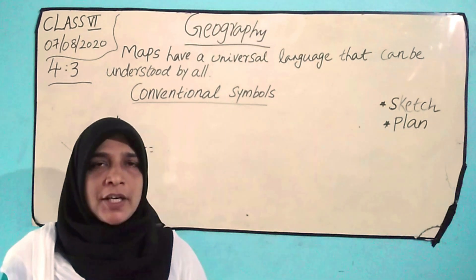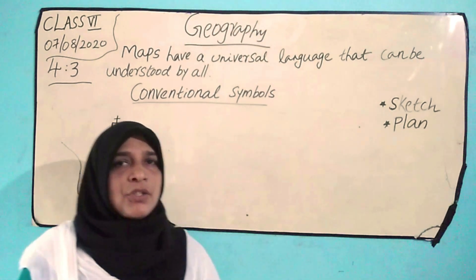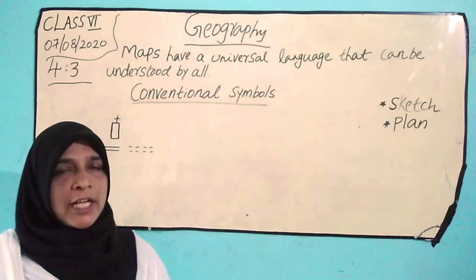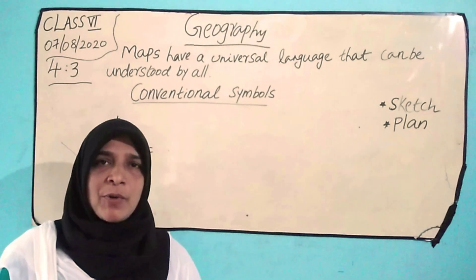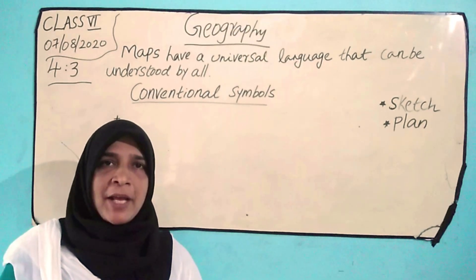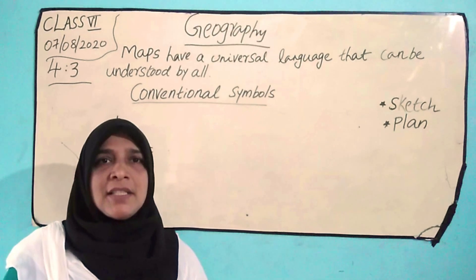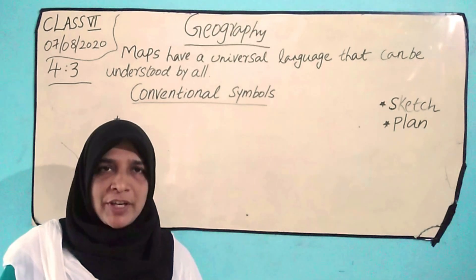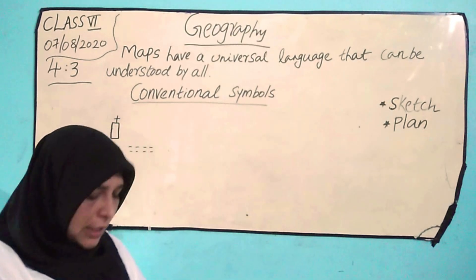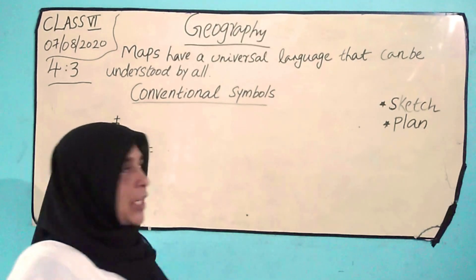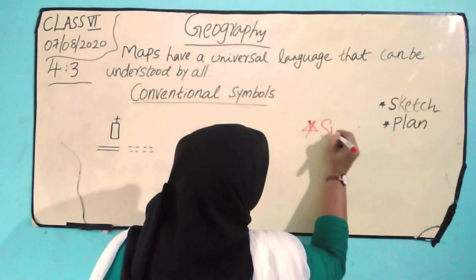How are you all? Today I will tell you about the third component of a map. Nazarene, stand up and say, what is the third component of a map? The third component of a map is symbol.